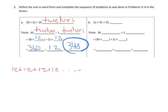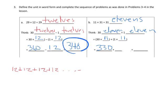Let's take a look at number B: 11 times 31. They've decided to guide us to think of this as 31 11s, though we could have thought of it as 11 31s. 31 11s can be thought of as 30 11s plus 1 11, so that's 30 times 11 plus 1 times 11. That's 330 plus 11, which gives us 341.